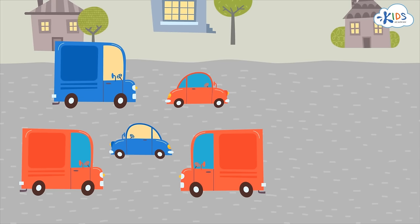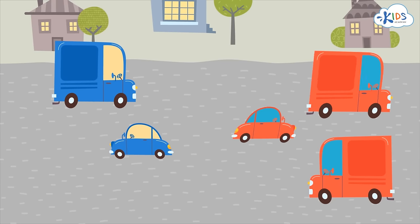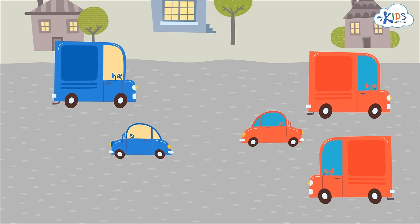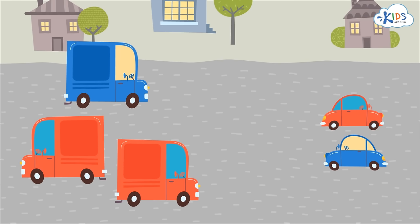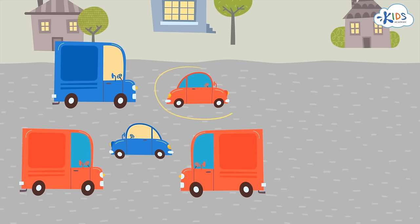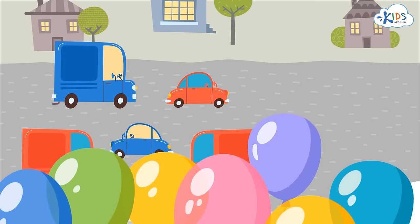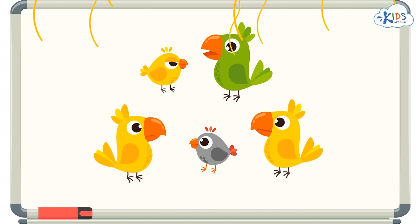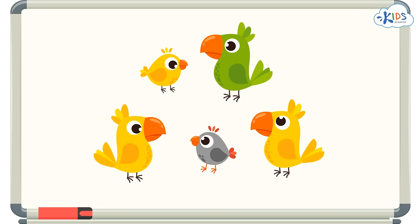There were two ways to sort this group. First, we sorted this group of cars by color — we found all the red cars. Then we sorted the same group by size — we found all the small cars. Some of the cars belong to both groups, and that's okay. I'll leave you with a challenge: can you sort this group two different ways? I'll give you some time to think, but if you need more time, you can pause the video and answer when you're ready.